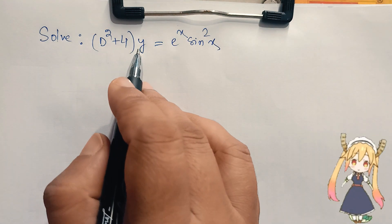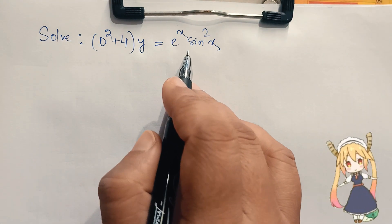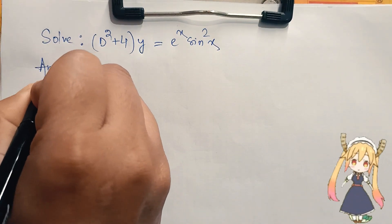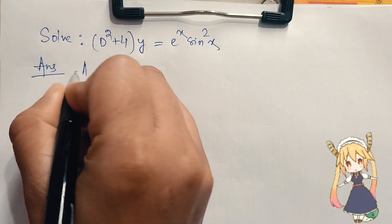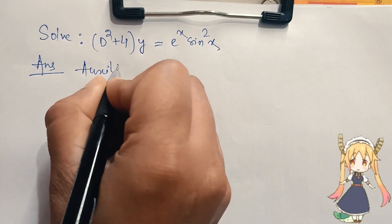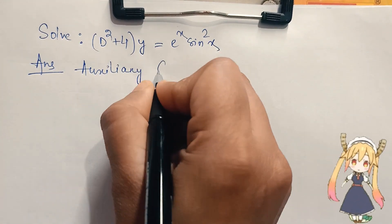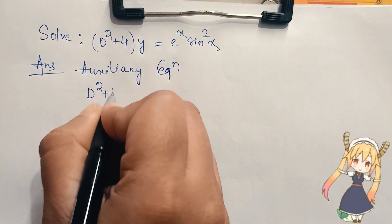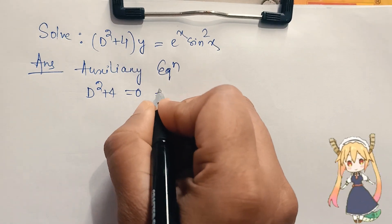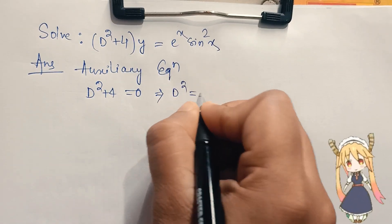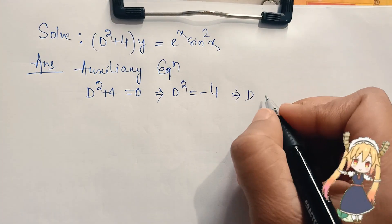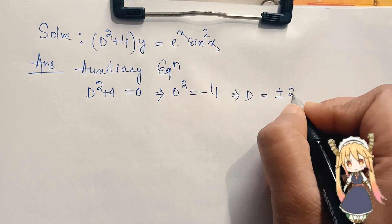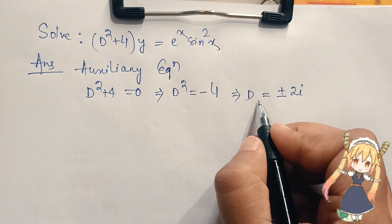Solve (D² + 4)y = eˣsin²x. We first write the auxiliary equation: D² + 4 = 0, which implies D² = -4, and therefore D = ±2i. Since the value of D is a complex number, we proceed to find the complementary function.